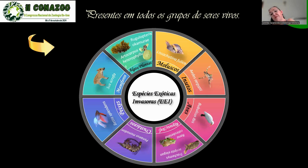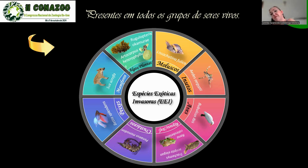Espécies invasoras estão presentes em todos os reinos, tanto no reino das plantas quanto no reino animalia, com os moluscos, insetos — quem não lembra do Aedes aegypti — aves, répteis, anfíbios, crustáceos, mamíferos, peixes, vírus. O coronavírus é um vírus exótico invasor. Temos também algumas bactérias e alguns fungos.